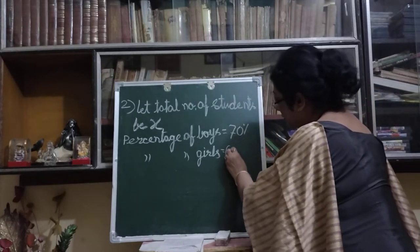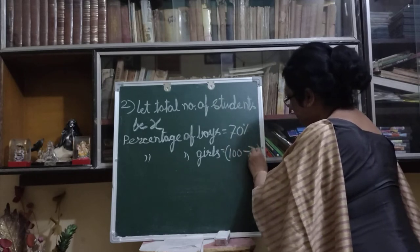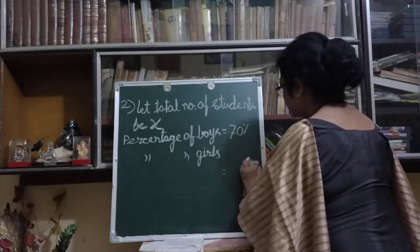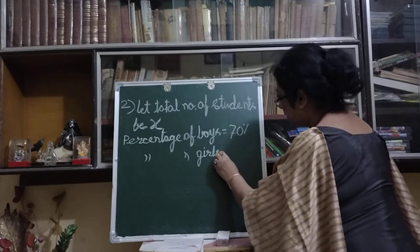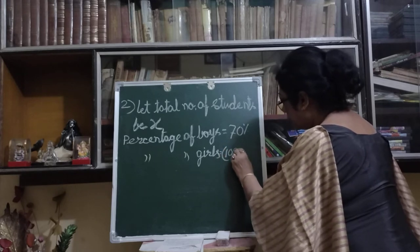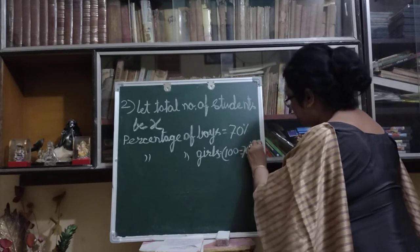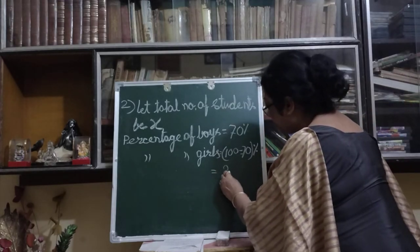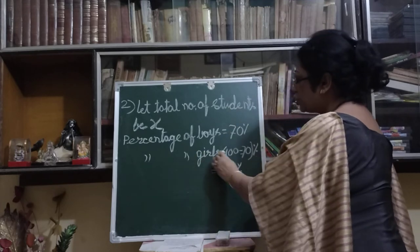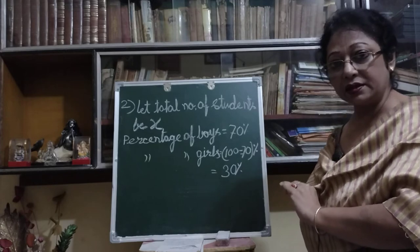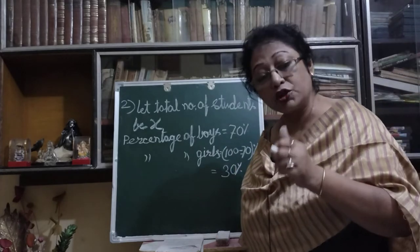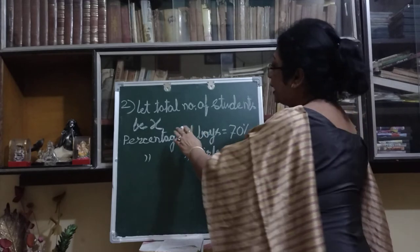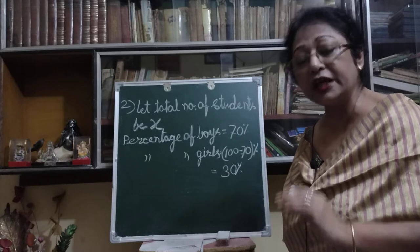So we do 100 − 70 = 30%. Percentage of girls in that school is 30%. They have also given the actual number of girls, so from that we can find the total number of students.